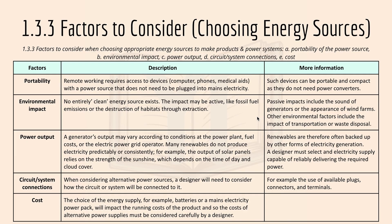Power output: a generator's output may vary according to conditions at the power plant. Many renewables do not produce electricity predictably or consistently. For example, the output of solar panels relies on the strength of sunshine, which depends on time of day, cloud cover, and location. Renewables are therefore often backed up with other forms of electricity generation. The designer must select an electrical supply capable of reliably delivering the required power consistently.